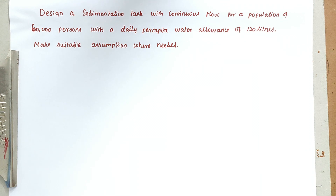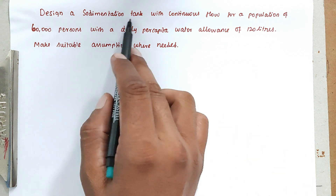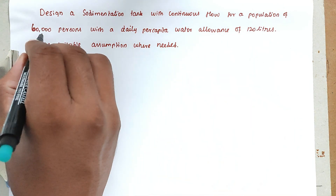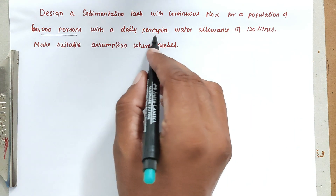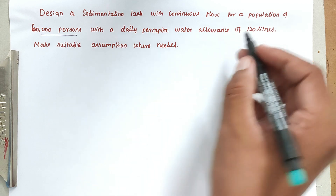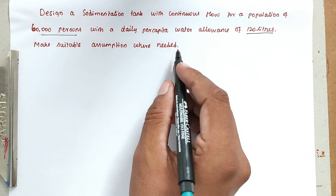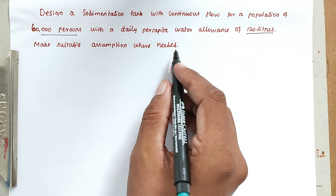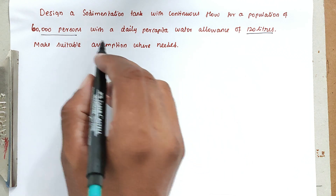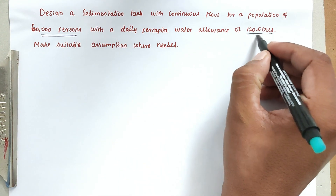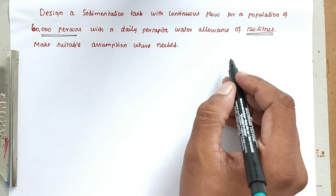Hello friends, welcome to Civil Engineering Exam. Today we are going to see a problem related to environmental engineering, on the topic of sedimentation tanks. Design a sedimentation tank with continuous flow for a population of 60,000 persons with a daily per capita water allowance of 120 liters. Make suitable assumptions where needed.